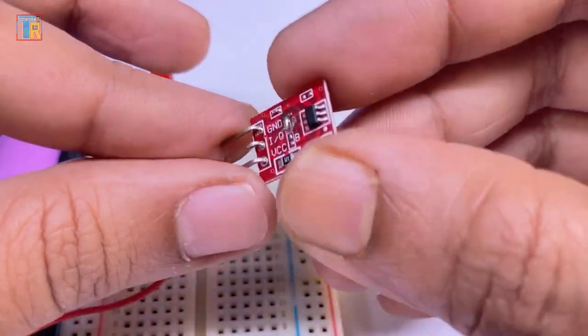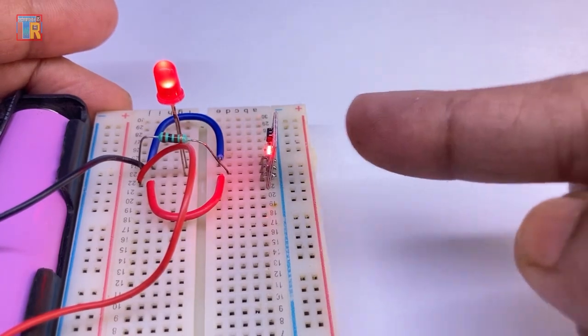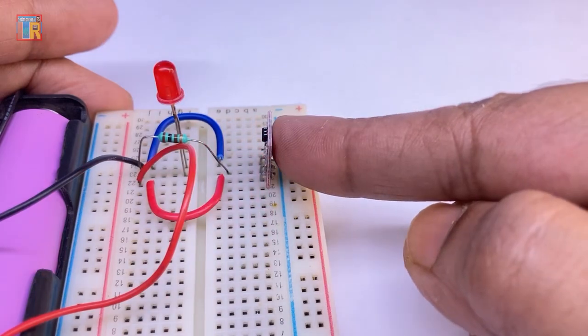When A jumper is shorted and B jumper is open, the LED turns off when I put my finger on the sensor. Otherwise the LED glows.